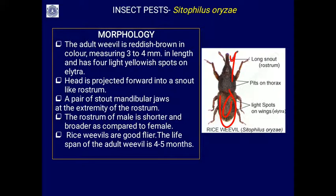Rice weevils are good fliers - they can fly from one place to another and also crawl. The lifespan of the adult weevil is about four to five months. They can survive without grain for about one month, so it is important to keep storage rooms clean, as they may infest at any time.